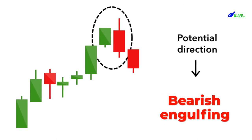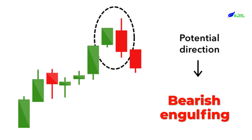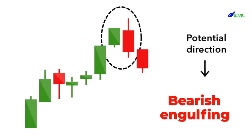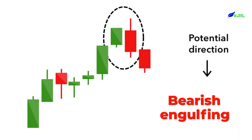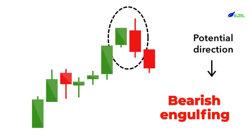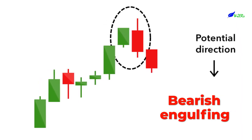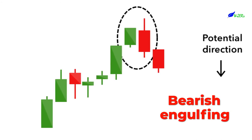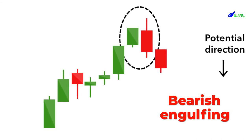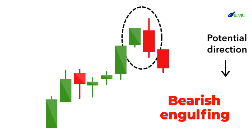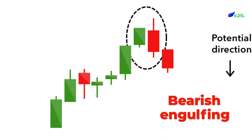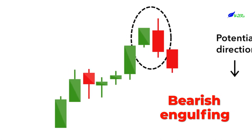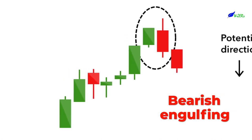Bearish Engulfing. A bearish engulfing pattern occurs at the end of an uptrend. The first candle has a small green body that is engulfed by a subsequent long red candle. It signifies a peak or slowdown of price movement and is a sign of an impending market downturn. The lower the second candle goes, the more significant the trend is likely to be.